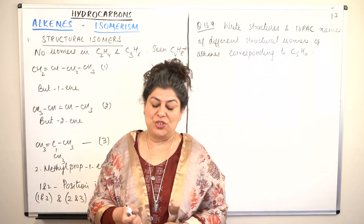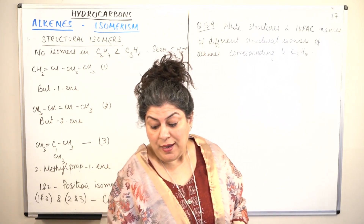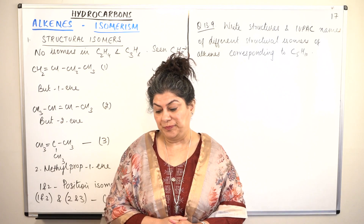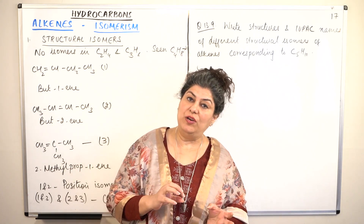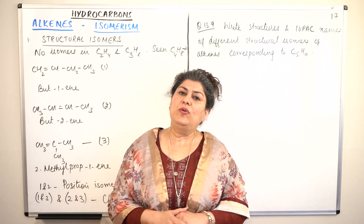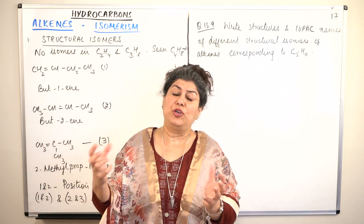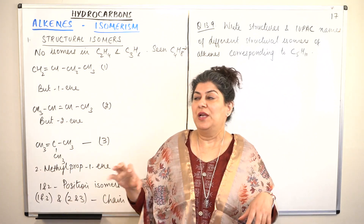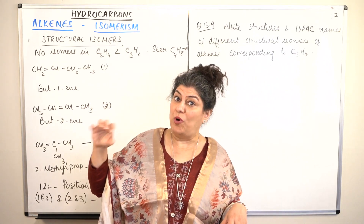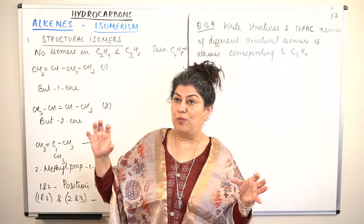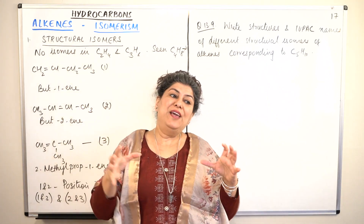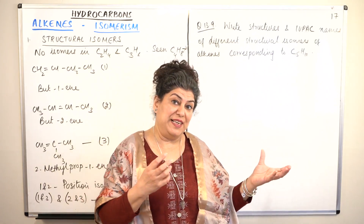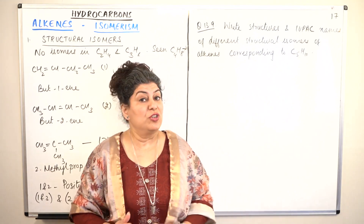Before I come to this, let us first revise what isomerism is. Compounds that have the same molecular formula but different structural formula are said to be isomers. If there is a change in the bonding that results in a difference in the structural formula, those isomers are known as structural isomers. And if the bonding is also the same but the orientation of the atoms is different, such isomers are known as geometrical isomers or stereoisomers.